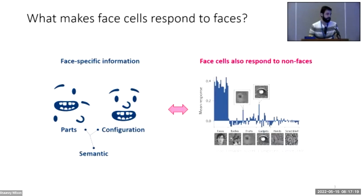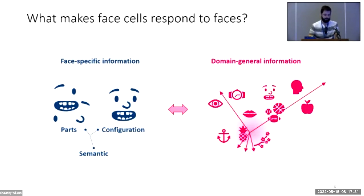However, there's one potential problem with this idea: if face cells only respond to face-specific properties, what explains their responses to non-face objects, which don't have any face parts? We believe the answer is that face cells are part of a domain-general representation, and that they encode visual properties that are applicable across domain boundaries.